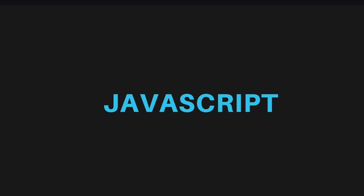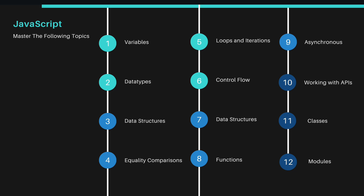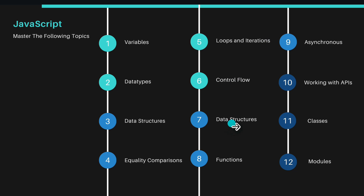Now let's talk about what topics you have to learn in the next 10 days to master JavaScript — this is the complete roadmap. On day one, start with variables, which won't take more than an hour. Then comes data types, followed by data structures, equality comparison, loops and iterations, control flow, advanced data structures, functions, asynchronous programming, working with APIs, classes, and modules.